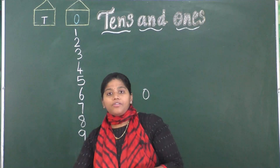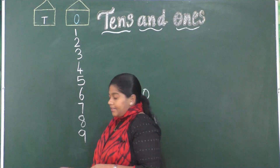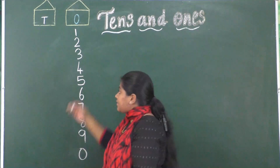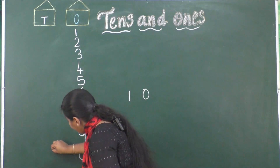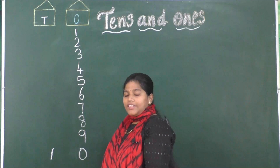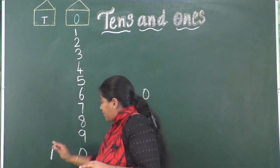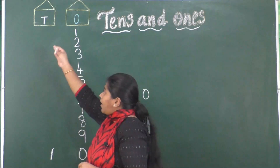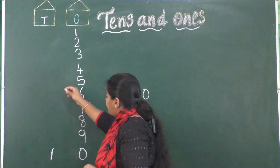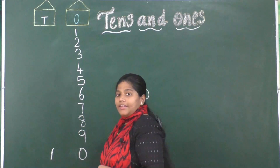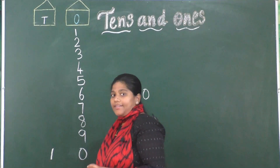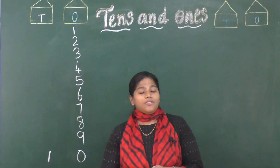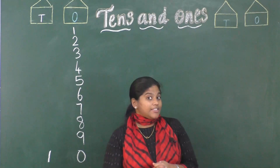Now let's see how we are going to write number 10. First we will write 0 in the ones place, and 1 in the tens house. Here 10 has 2 digits: 0 and 1. We cannot keep 2 digits in the ones house, so we made another house and named it the tens house. We put number 1 in the tens house. So now after 10, what is the number? After 10 it is 11.